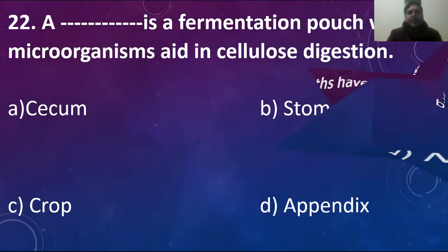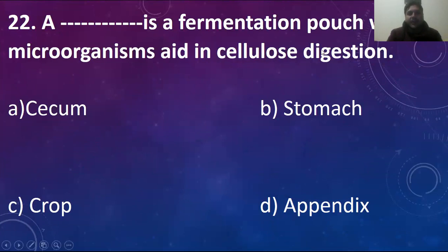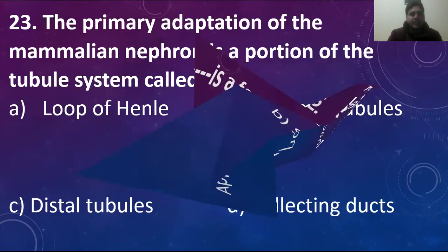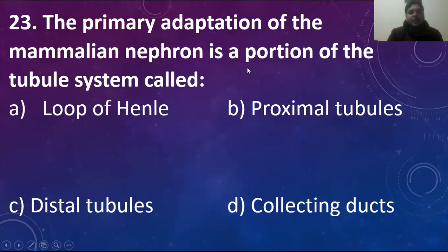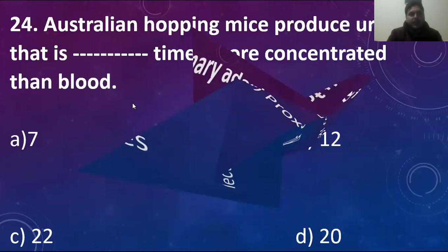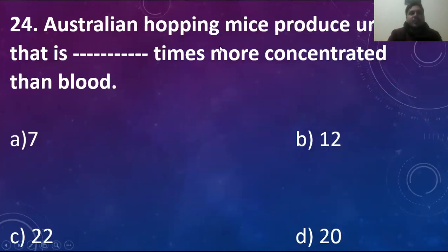A blank is a fermentation pouch where microorganisms aid in cellulose digestion — a cecum is a fermentation pouch where microorganisms aid in cellulose digestion. MCQ number 23: the primary adaptation of the mammalian nephron is a portion of the tubule system. The primary adaptation of the mammalian nephron is the development of a U-shaped structure, the loop of Henle. Australian hopping mice produce urine that is almost 22 times more concentrated than blood. Option C is the right answer.